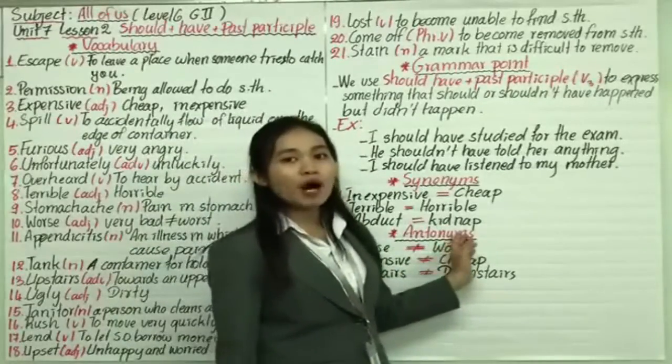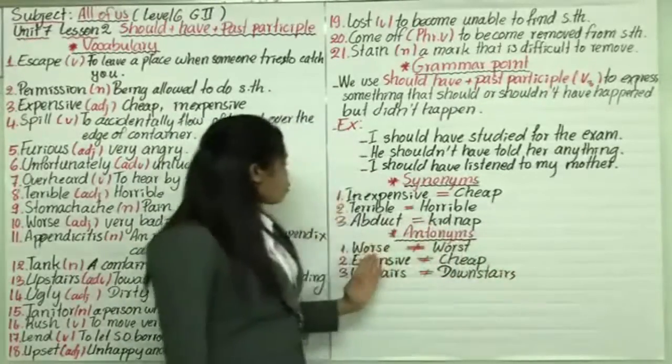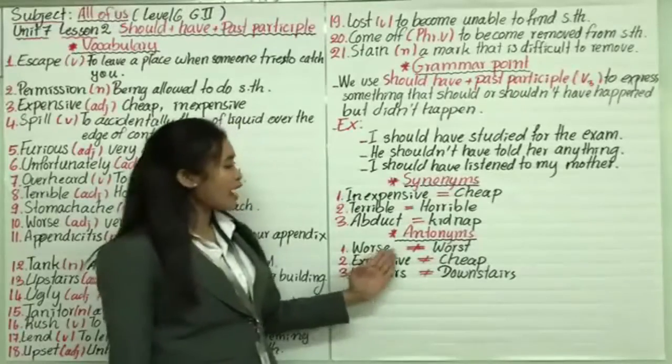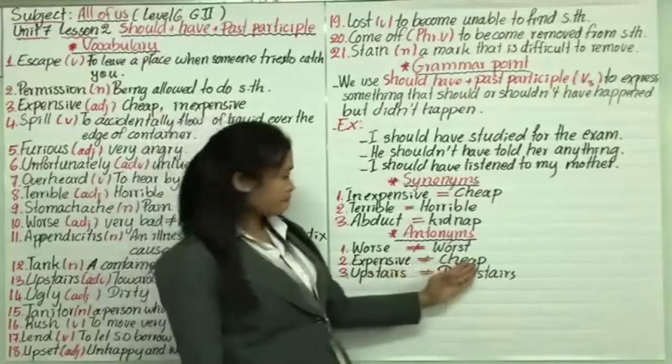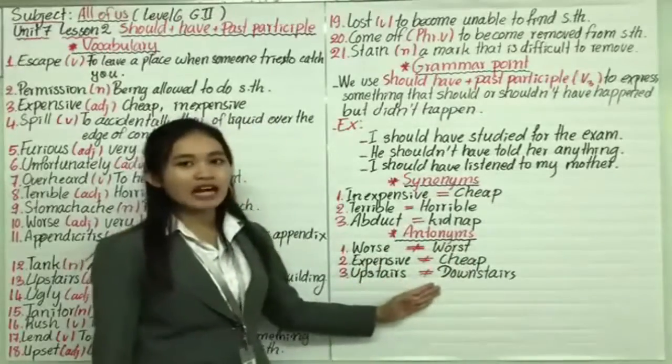Antonyms means words that have opposite meanings with each other. For example, worst means very bad, and best means very good. Number two, expensive, opposite with cheap. Upstairs, opposite with downstairs. Thank you so much.